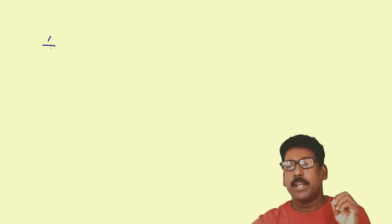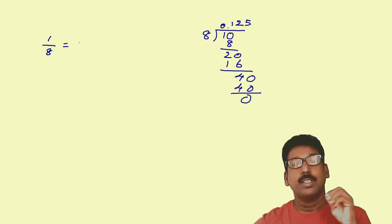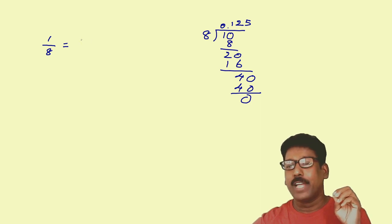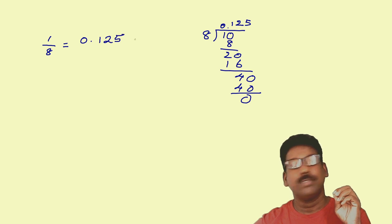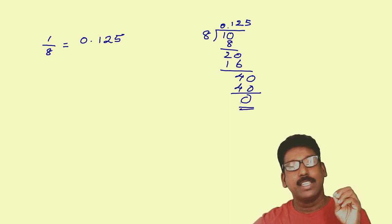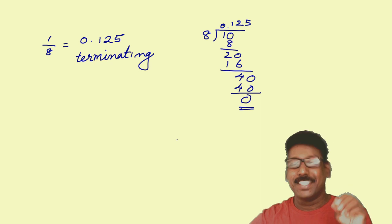Let me take a rational number 1 by 8. You divide 1 by 8, what did you get? While dividing 1 by 8, you get the answer 0.125. Here, the division process ends. That means the remainder you are getting is 0. So this kind of decimal numbers, we can call it as terminating decimals.